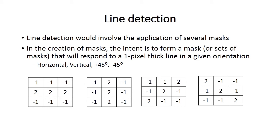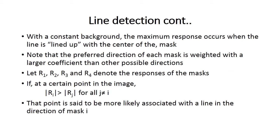Line detection involves the application of several masks with threshold values. The intent is to form a set of different matrices that will respond to one-pixel-thick lines in a given orientation — that is, horizontal, vertical, +45 degrees, and -45 degrees. With a constant background, the maximum response occurs when the line is lined up with the center of the matrix. The preferred direction of each mask is weighted with a larger coefficient than other possible directions.